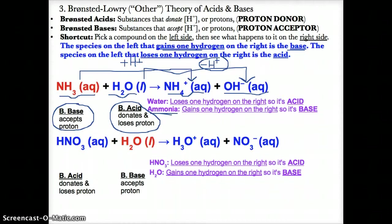Water here is the Bronsted acid. Whichever species loses one hydrogen going to the right is the acid because that's what donates the hydrogen ion, whereas the species that gains one hydrogen ion on the right is the base because that's what accepts the H+.